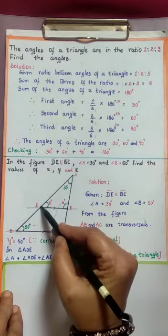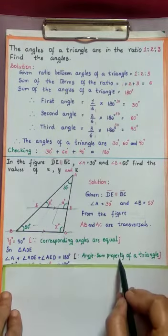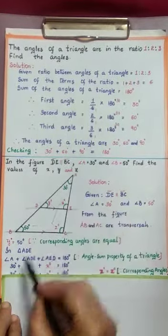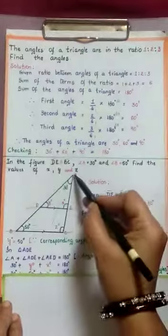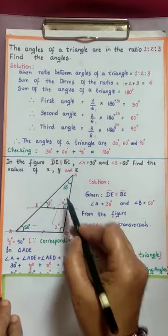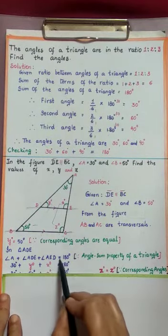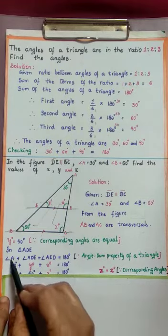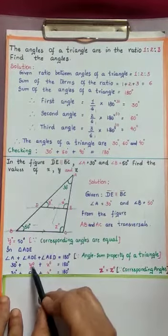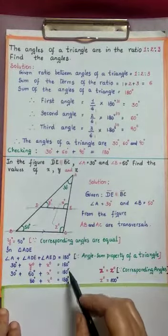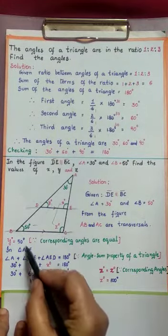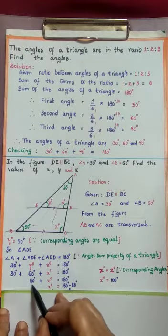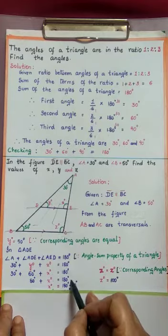After getting Y, observe triangle ADE. We use the angle sum property to find X. In triangle ADE: angle A plus angle ADE plus angle AED equals 180 degrees, by the angle sum property of a triangle. Substituting the values: angle A is 30 degrees, angle ADE is Y degrees, and angle AED is X degrees. Since Y is 50 degrees: 30 degrees plus 50 degrees plus X degrees equals 180 degrees. 80 degrees plus X degrees equals 180 degrees.